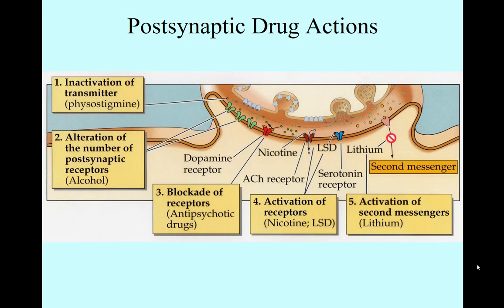Let's talk about how drugs act at the post-synaptic side of the synapse. What we see here are five different ways they can act. The first one is inactivation of a neurotransmitter — we can shut it down. Physostigmine does that by blocking acetylcholinesterase, similar to what we talked about earlier with biological weapons or sarin gas, and so it will increase acetylcholine at the synapse.